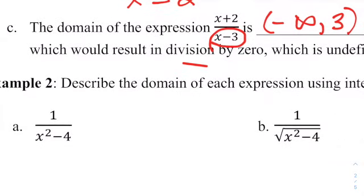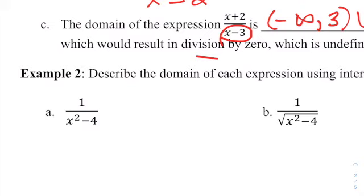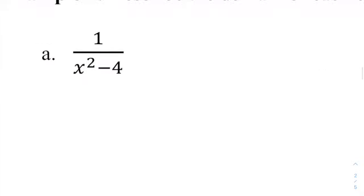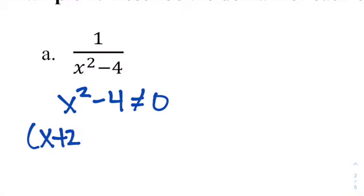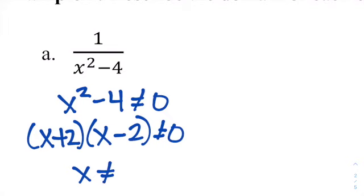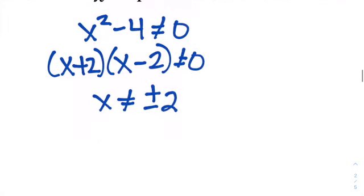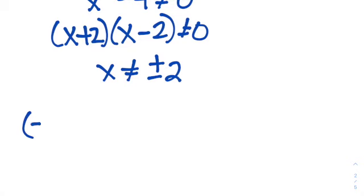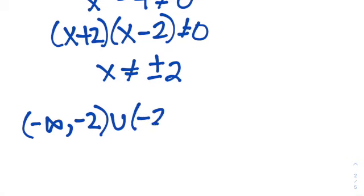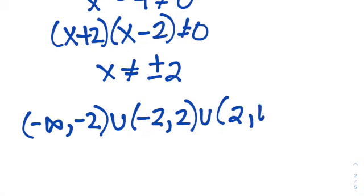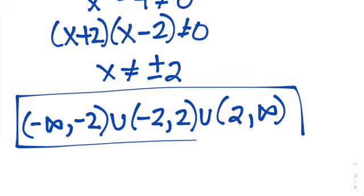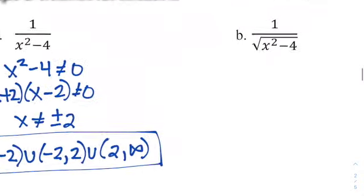Let's consider the example — describing the domain of each expression using interval notation. The first has X squared minus 4 in the denominator. We can't have 0 in the denominator, so that expression can't equal 0. When we factor it, that's X plus 2 times X minus 2, which does not equal 0. So X cannot equal plus or minus 2. In interval notation, the values included are all values less than negative 2, all values between negative 2 and 2, and all values greater than 2 — with parentheses because those values are not included.